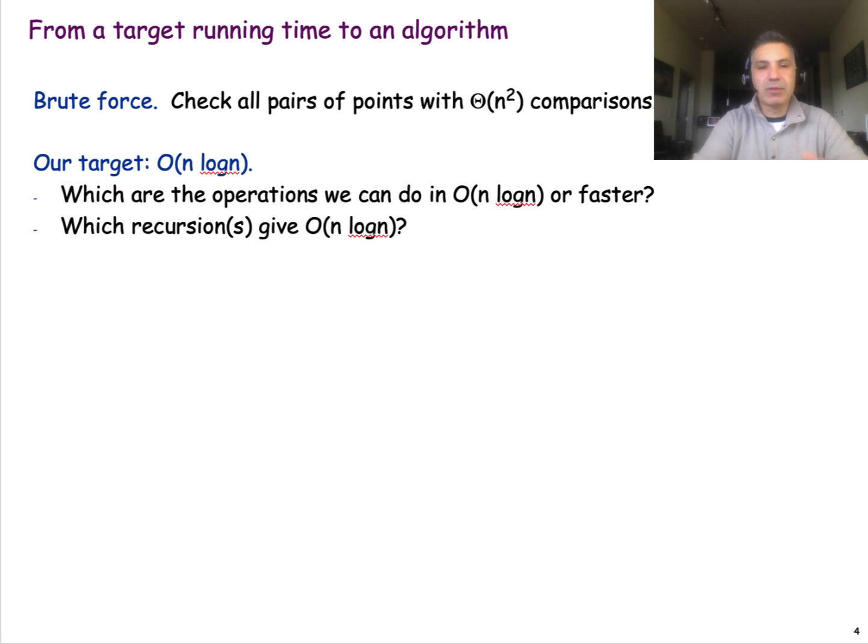When we design algorithms, we ask ourselves what is the brute force way of solving a problem. That gives us a running time that we know we can get, but ideally we would like to do better than that. Obviously, in this case, if we check the distances between all pairs of points, we can find the minimum distance. It would be theta n squared because the number of pairs of points is n choose 2.